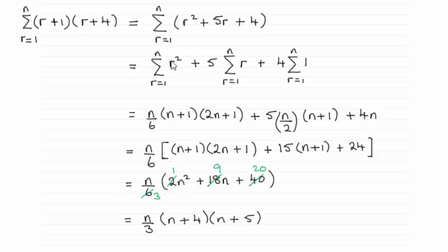We pick up on the standard results for sigma r squared and sigma r. Sigma r squared is this result here: n over 6 times (n+1) times (2n+1). And for sigma r it is n over 2 times (n+1). So it's just a question of substituting those results in.